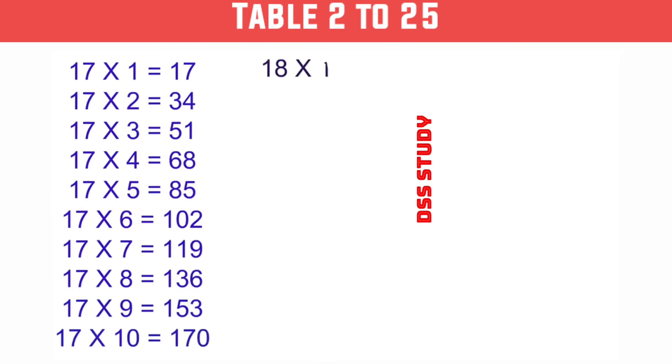18×1 is 18, 18×2 is 36, 18×3 is 54, 18×4 is 72, 18×5 is 90.